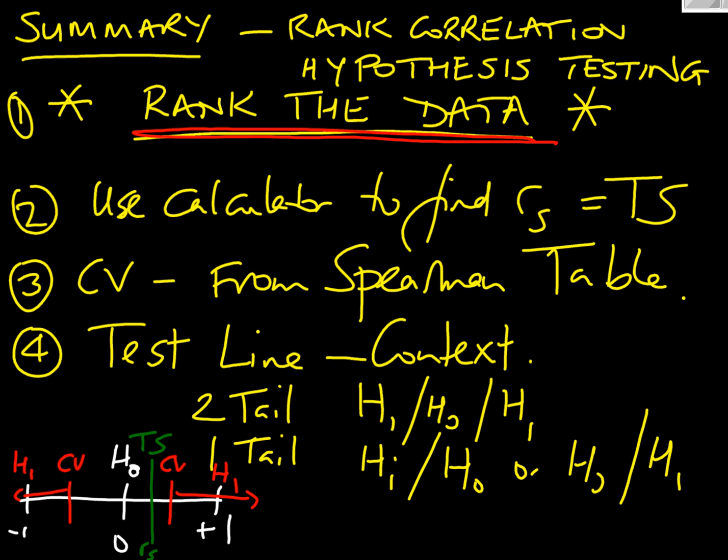Here's my end summary of rank correlation hypothesis testing. I think people forget to rank the data first, particularly in examples like above. Then use your calculator to find the RS value. For the critical value, look it up in your Spearman table. And then draw your test line. You could have one of any of these combinations. For a two tail, H1-H0-H1. But for a one tail, it could be H1-H0 or H0-H1. Then you reach your usual conclusions depending on where your test statistic is and whether it's in the critical region or not. So best of luck.